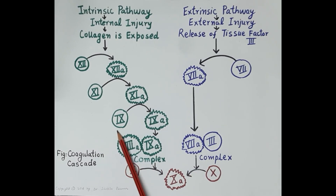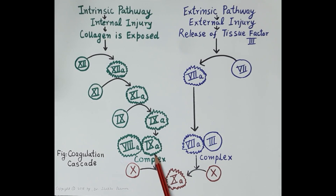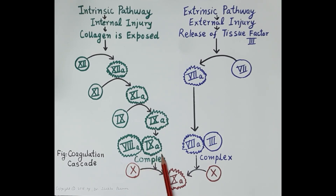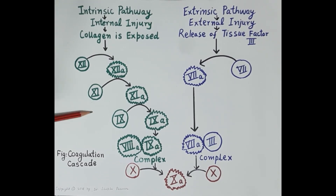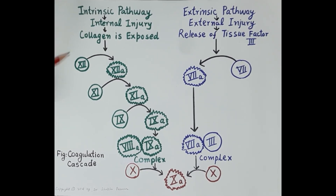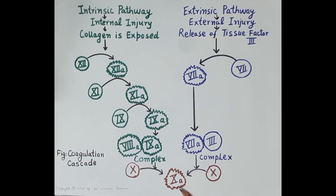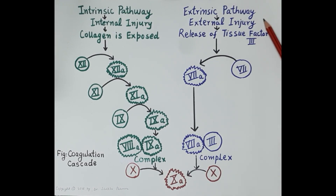Factor 11a further activates clotting factor 9 to 9a. Clotting factor 9a then forms a complex with activated clotting factor 8a, and this complex further activates clotting factor 10 to 10a. All these clotting factors function in a cascade — in a sequence — and finally the intrinsic pathway results in the activation of clotting factor 10 to 10a.